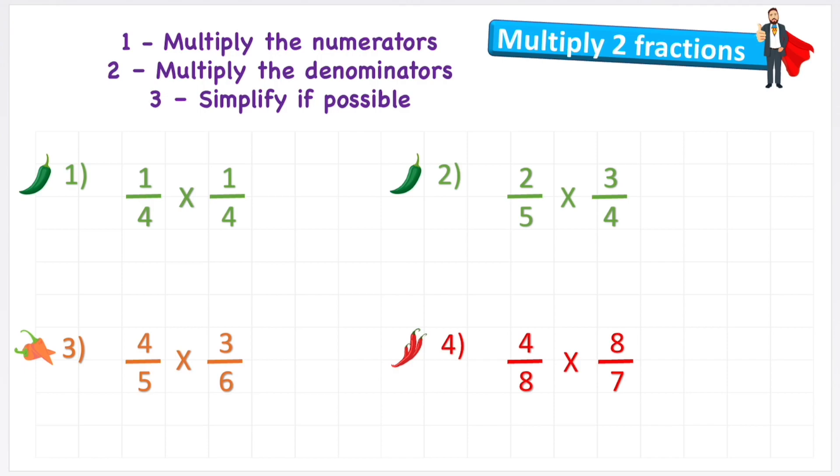Let's have a look at the first question then, this first green chili challenge. Nothing too complicated. We've got one quarter multiplied by another quarter. So first things first, let's multiply our numerators. So one multiplied by one, we know it's going to equal one. And then step two, multiply the denominators. My denominators are both four. So four multiplied by four is 16. And now step three says simplify if possible. Well, I know I can't simplify because I have a one and 16. So the only common factor of these two numbers would be one. So therefore, it's in its simplest form. So one quarter multiplied by another quarter is one sixteenth. Super simple, right?